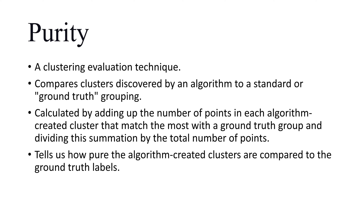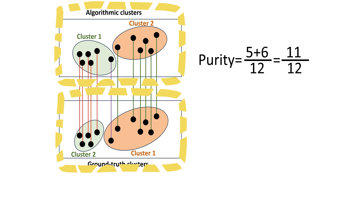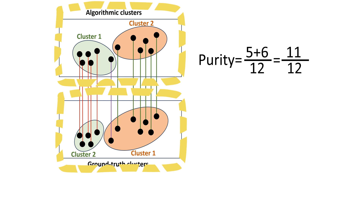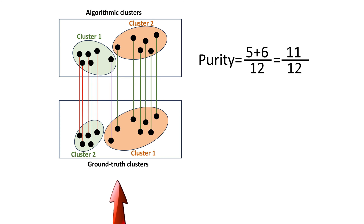Before the details, here is an example. We have 12 data points — that is, the original data table has 12 rows. These two boxes have the same 12 data points. In one box, I will present the algorithmic clusters — the clusters provided by an algorithm — and in the other box, I am presenting the ground truth clusters.